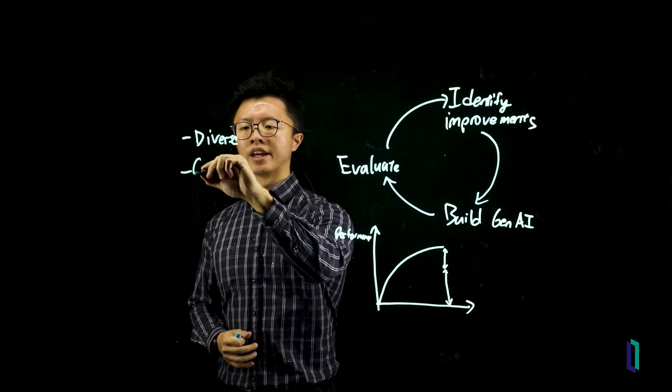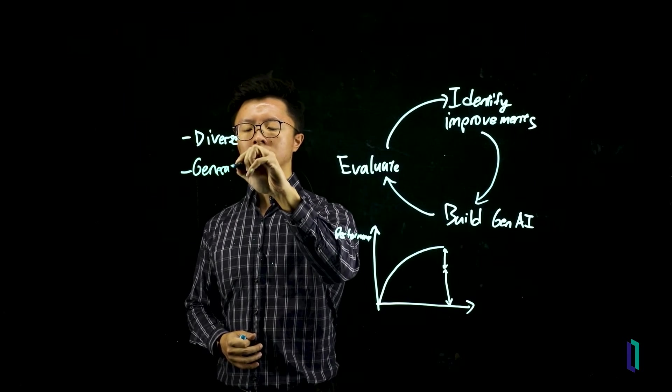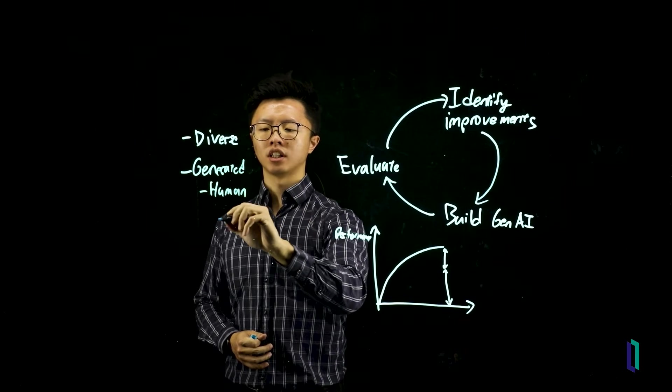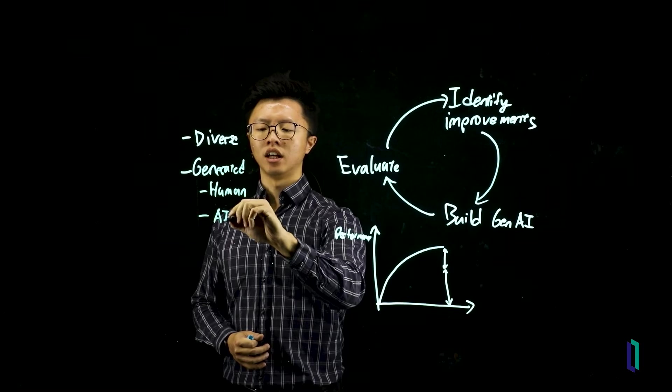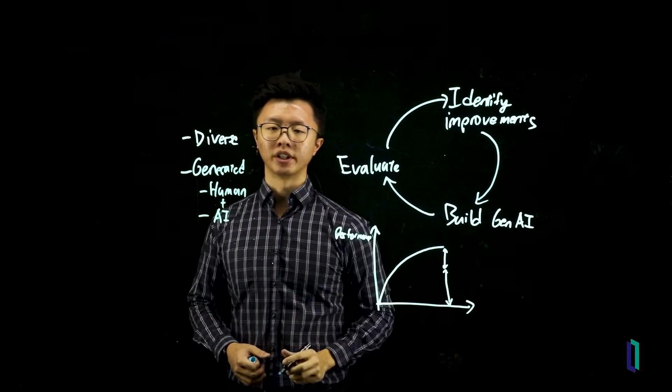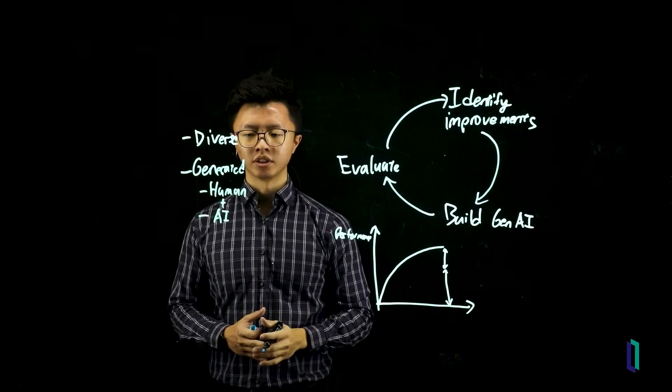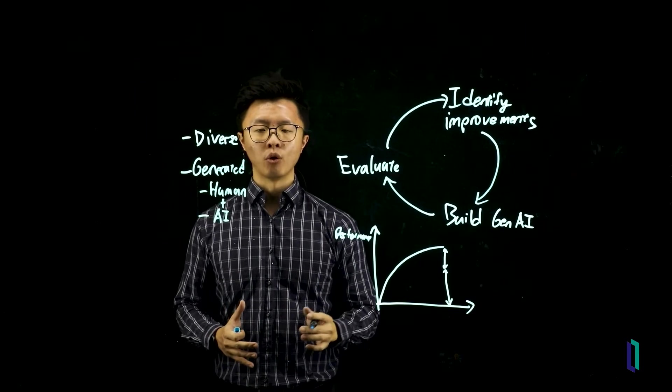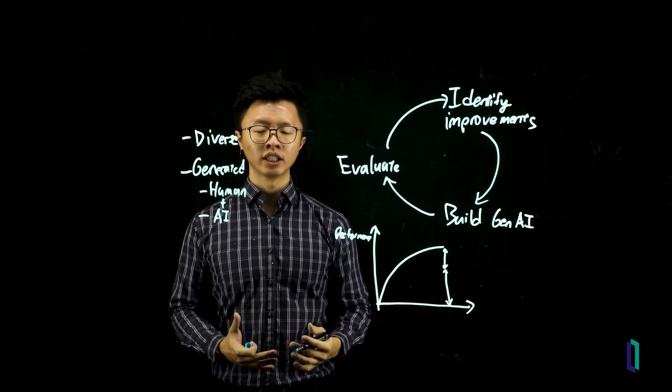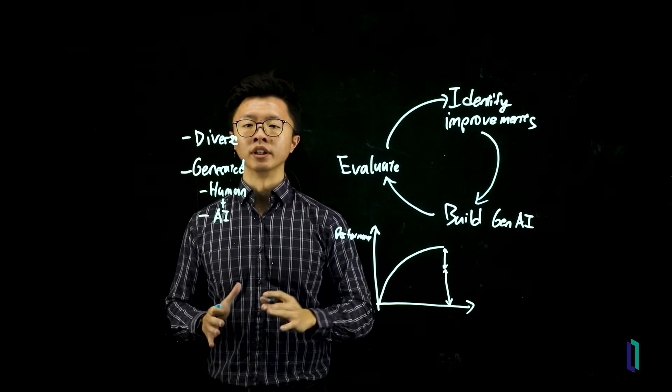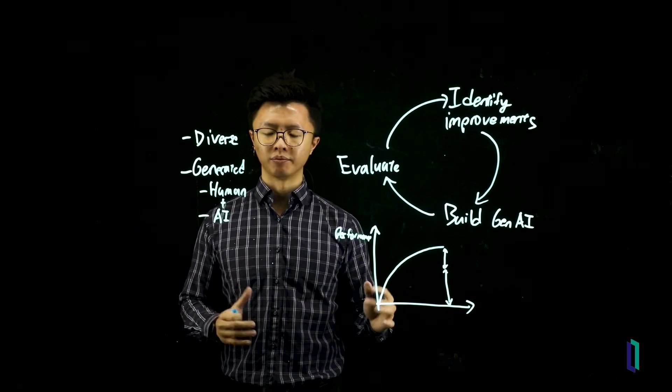Now, this can be generated by either humans, which will be your domain experts, or AI. Most of the time, you'll use both. A common strategy would be to get a domain expert to generate perhaps 20% or 10% of the evaluation data set. And you can use an AI to subsequently extrapolate that and generalize, introduce some noise to it before building a larger evaluation data set.